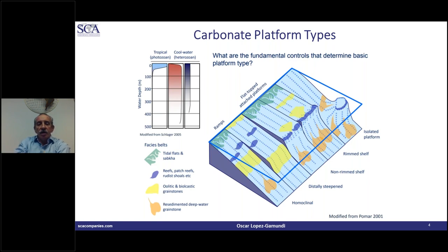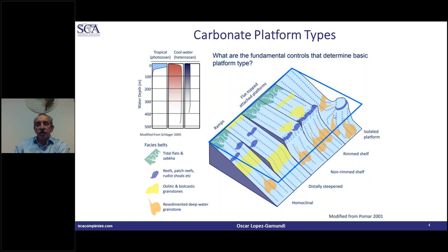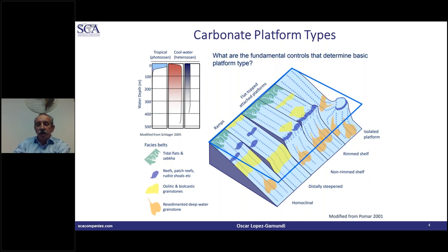Notice that in terms of reservoir potential, the most important potential is in the lithologies in blue in this diagram — reef, patch reefs, and shoals. The secondary objective is the oolitic shoals. A third objective, in terms of exploration, is the gravity-reworked material off the reef margin to the slopes, shown in orange or pale brown, which represents redeposited deepwater grainstone. I want to emphasize the transition between one type and another.